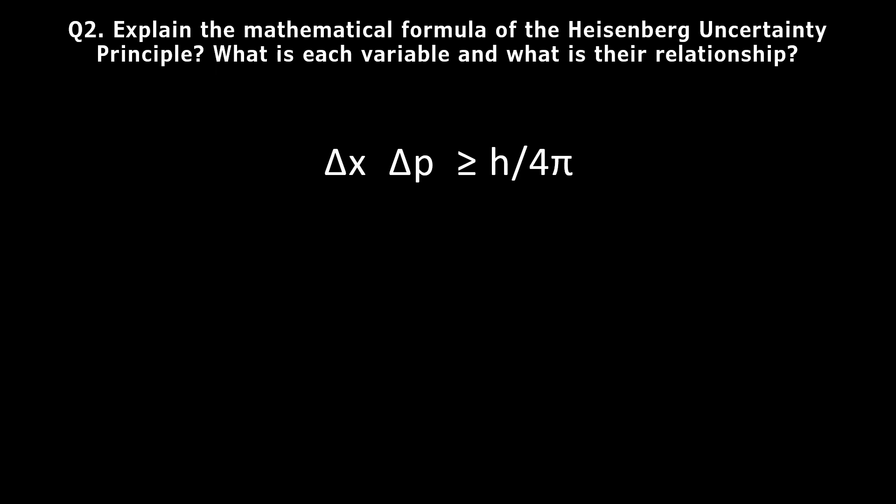The equation implies that as you try to improve the measurement precision of one variable, for example as you try to improve the precision of position, the precision of the other variable, momentum, will decrease.